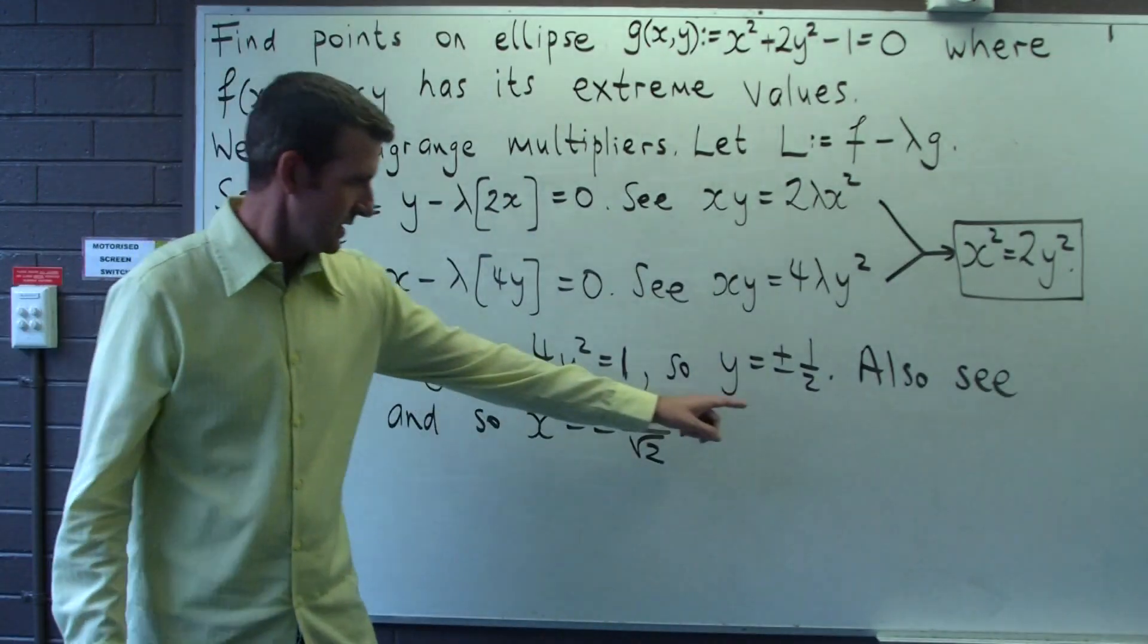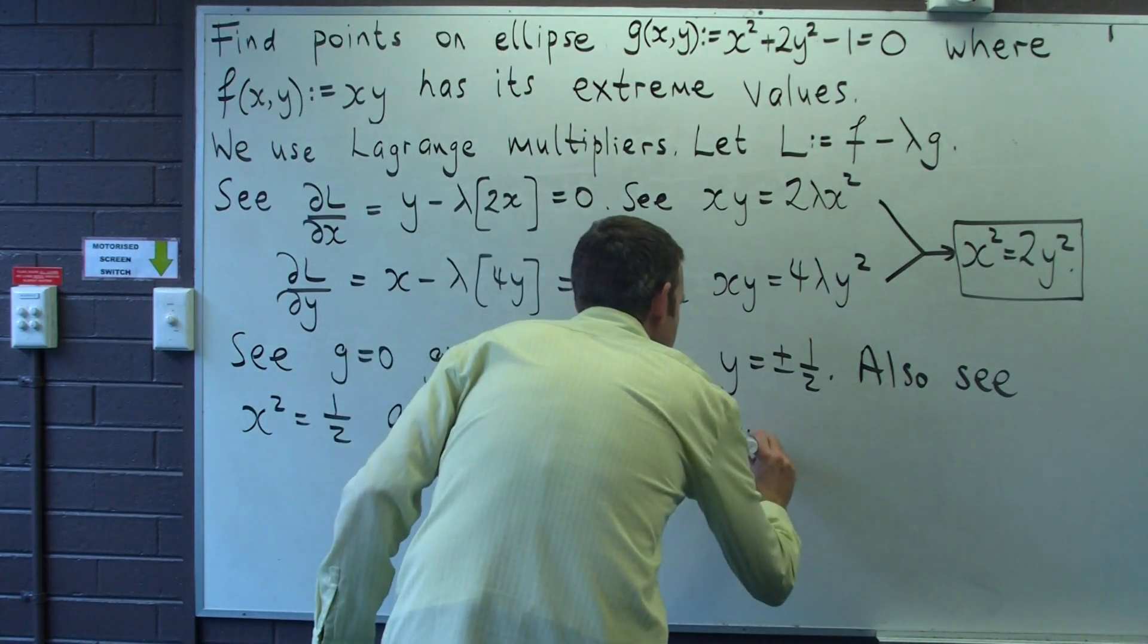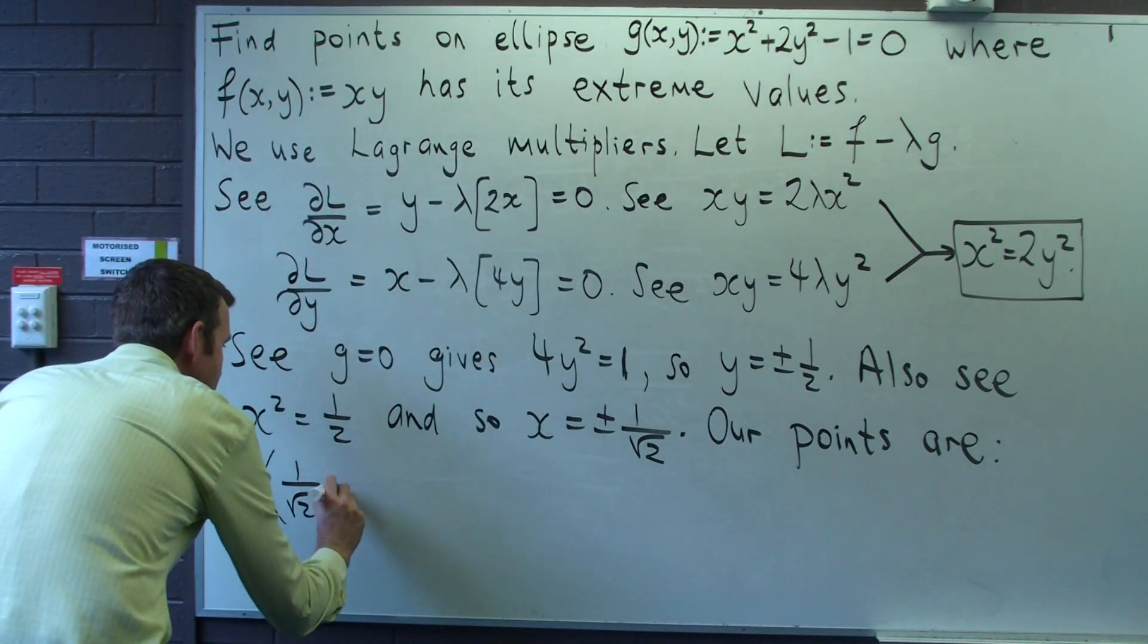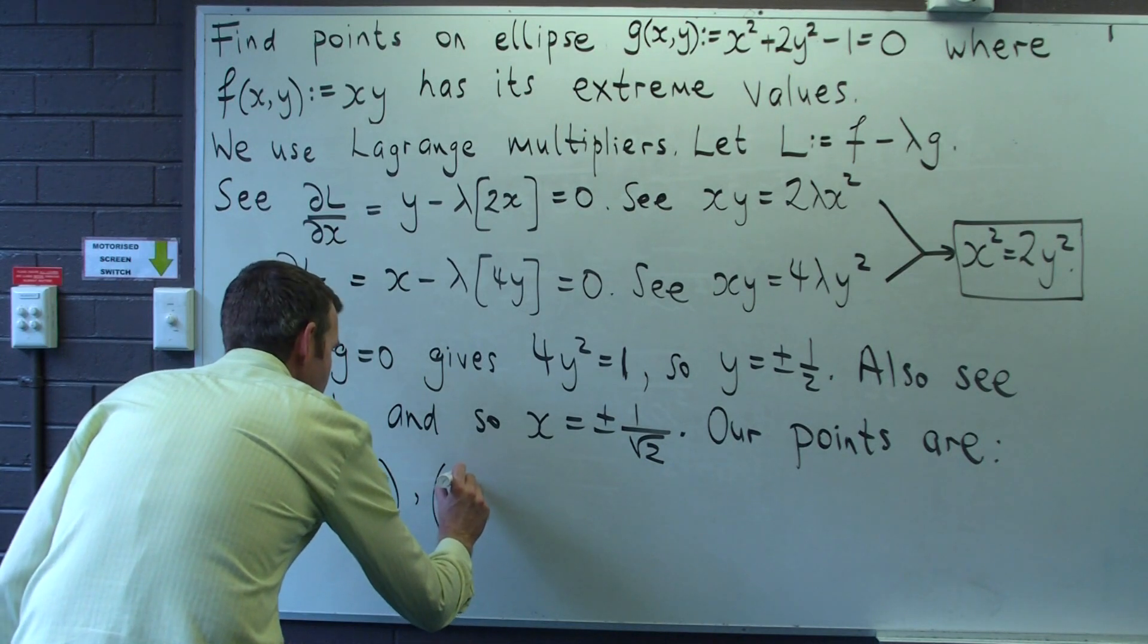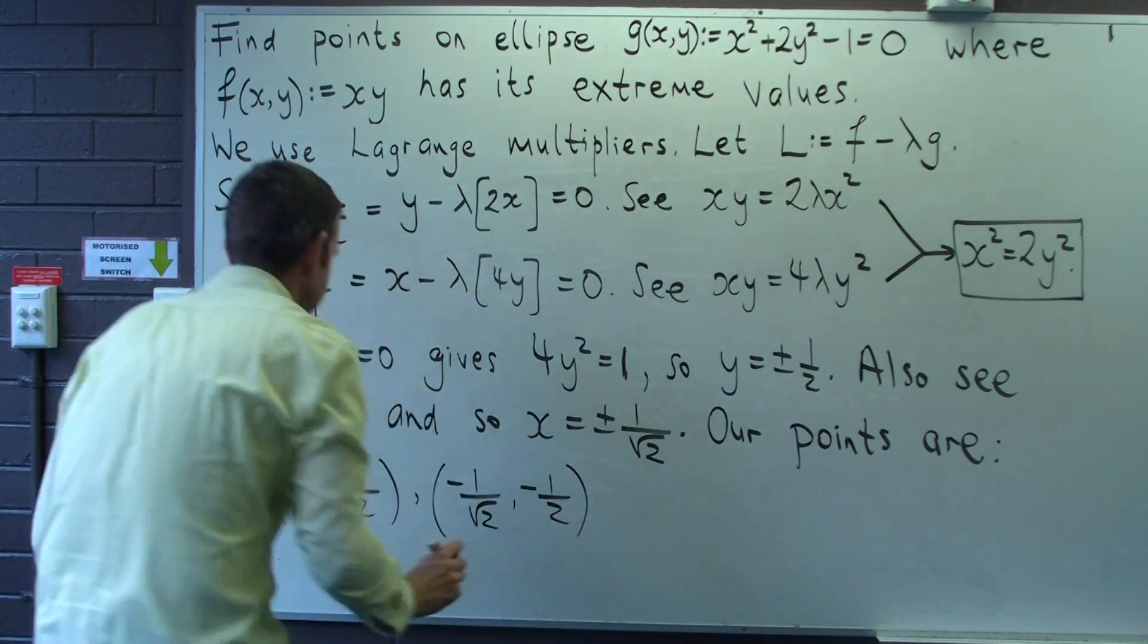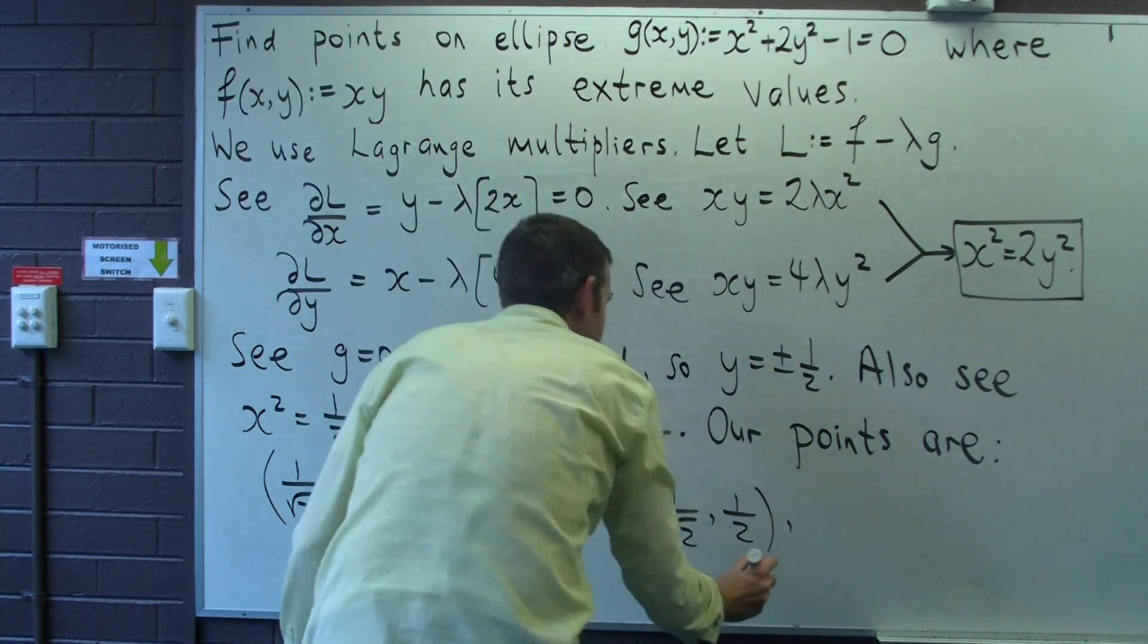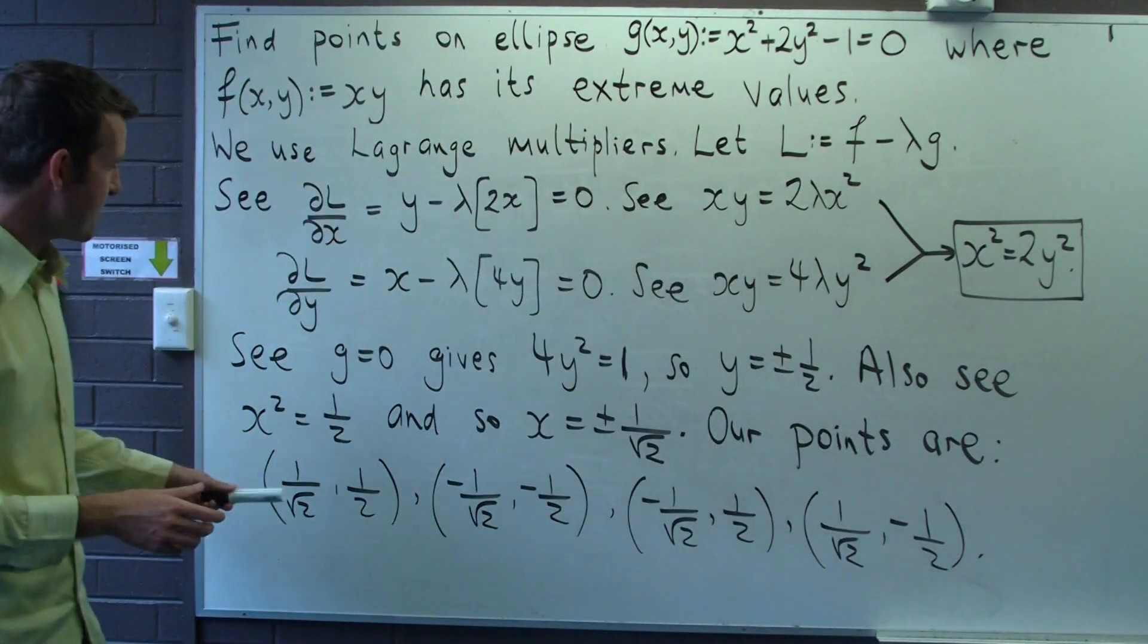Okay, so let's put our points together. These are our y points, these are our x points. So there's four points in total. Okay, so one on root two and one half; minus one on root two and minus one half. So that's our first one, our second one, and then let's mix the signs up. Okay, so there are our four points that lie on our ellipse.